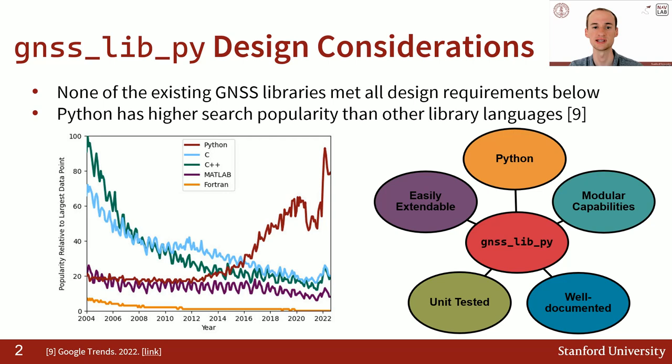Python has become increasingly popular with time and is currently the most popular programming language. Since our lab could not find an existing GNSS library that met all of our design requirements, we set out to create our own. Specifically, we wanted a Python library which was modular, meaning you could easily switch components in between — for example, positioning algorithms — and it would still work.